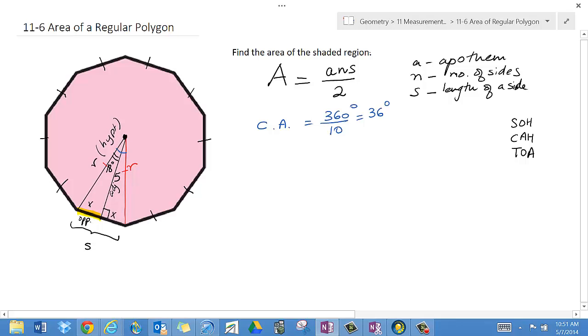So it seems to me, since I have opposite and adjacent, I would choose tangent. Tangent of 18 degrees is opposite, which is X, over adjacent, which is 5.